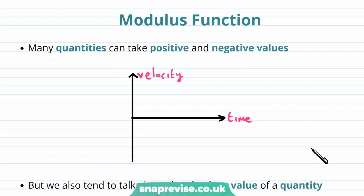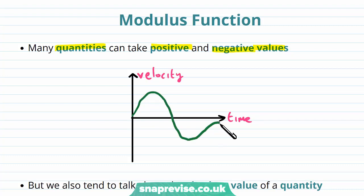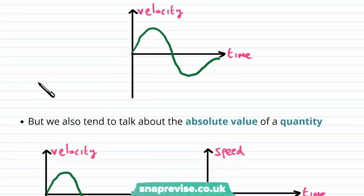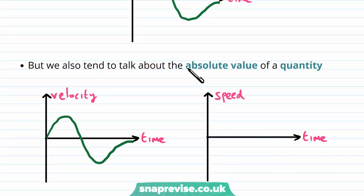So what exactly is the modulus function? Many quantities can take positive and negative values. Take for example a velocity-time graph — as you can see, the velocity takes both positive and negative values for different values of time. But we also tend to talk about the absolute value of a quantity. The absolute value just takes the positive version of whatever quantity you have. If it's already positive it keeps it the same, and if it's negative it turns it into the positive version.